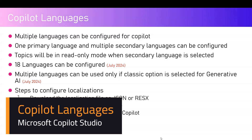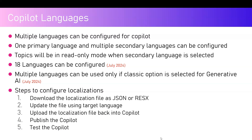In this video I'm going to talk about language settings within Copilot Studio. Microsoft Copilot Studio allows you to create a bot in different languages. There are concepts around language creation. First, you will have one primary language for your bot — for example, English — and you can have secondary languages which the bot will respond in. There are currently 18 languages which you can configure as of July 2024.